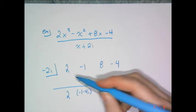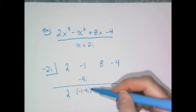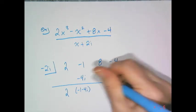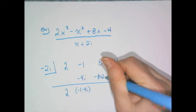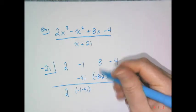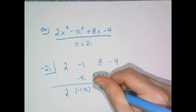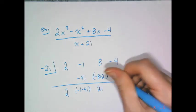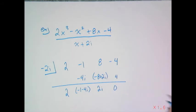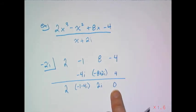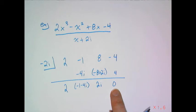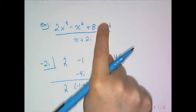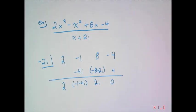Then I multiply negative 2i times negative 1 minus 4i and I get negative 8 plus 2i. Then I add the 8 plus the negative 8 plus 2i and I get a plain old 2i. Then I multiply negative 2i times 2i and I get a 4, which means I get a zero. This zero is very significant, it means I have no remainder, which meant that x plus 2i is a factor of that numerator or that dividend.